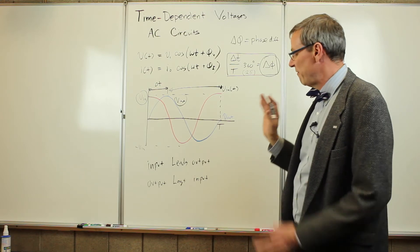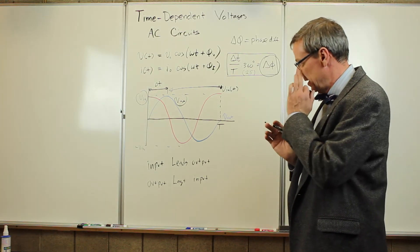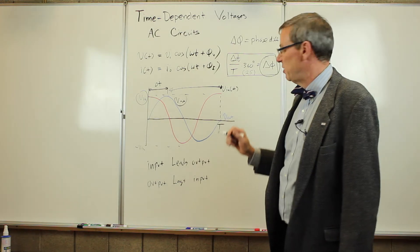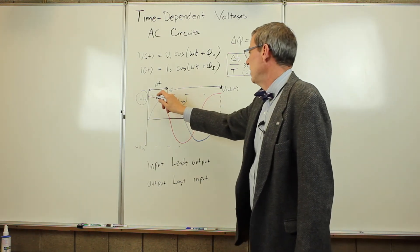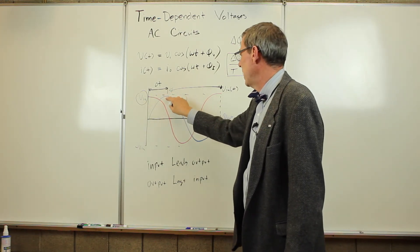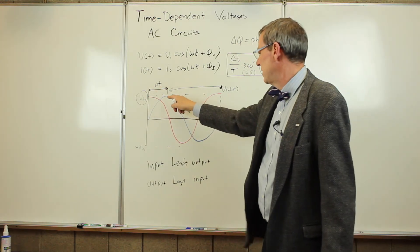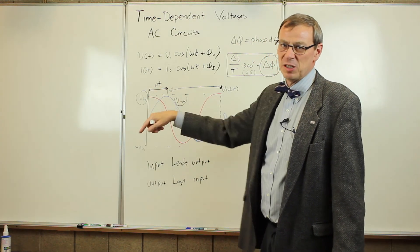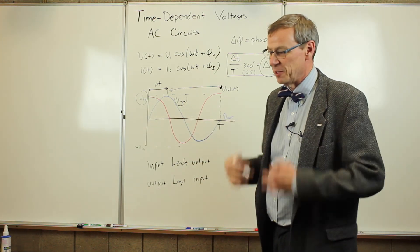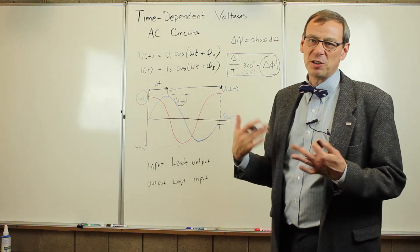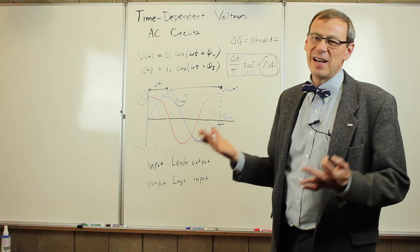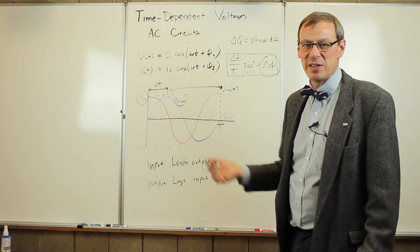The one thing you have to be very careful about when doing this is your sign convention. You want to make sure that if you're measuring the difference between the output and the input, make sure that's a negative time there because the output is lagging. If the output is leading, it's positive. You've got to follow the same convention, otherwise you'll introduce a minus sign. It's better just to think about it a little bit as you're doing things. So that's an introduction to time-dependent voltages.